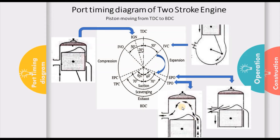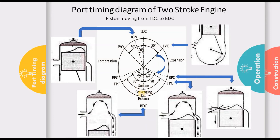Since fresh charge is coming in and burnt gases remain inside the combustion chamber, the incoming fresh charge pushes the burnt gases out through the already-open exhaust port. This process is called scavenging. Scavenging is the process of flushing out burnt gases from the cylinder with the help of the incoming mixture. This starts when the transfer port opens and continues as the piston reaches BDC. So exhaust port opened, expansion ended; when transfer port opened, scavenging started.